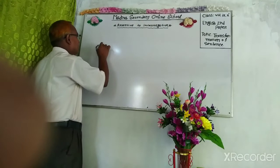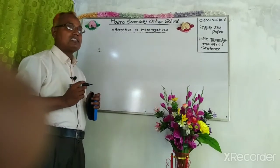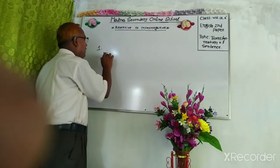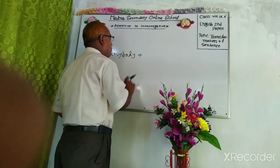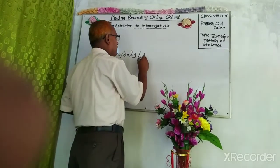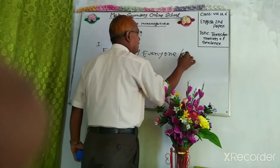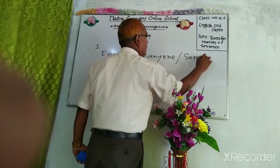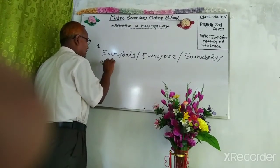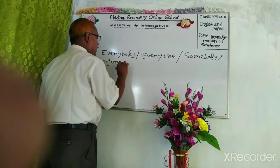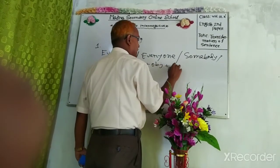First rule. If an assertive sentence starts at first with everybody, everybody, everyone, oblique somebody, oblique anyone, plus verb, plus object, plus extension.